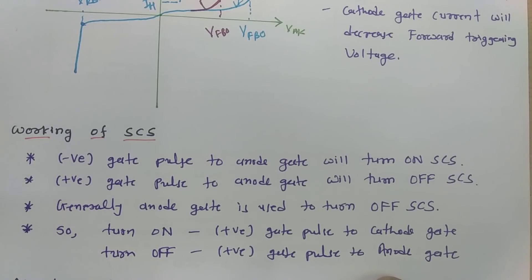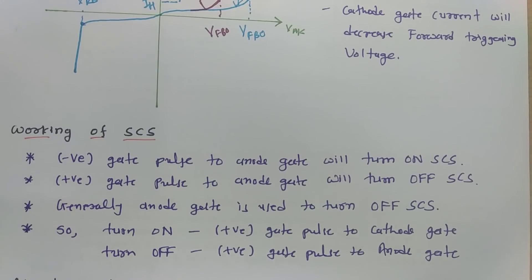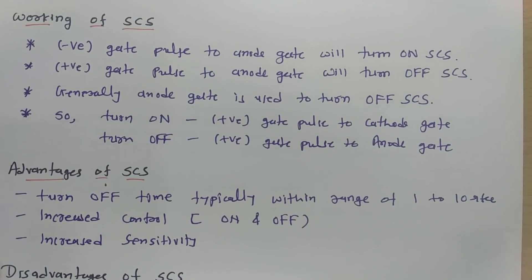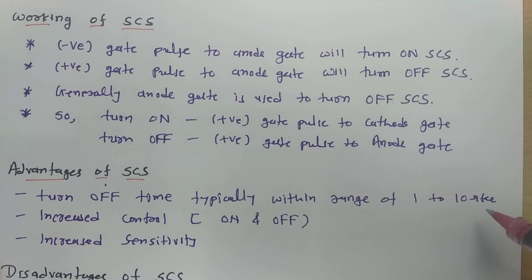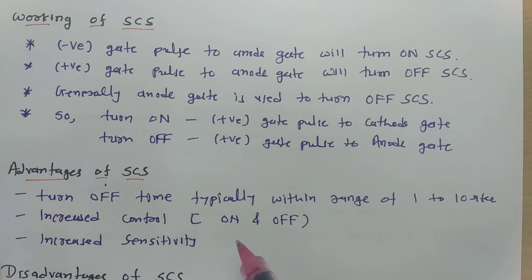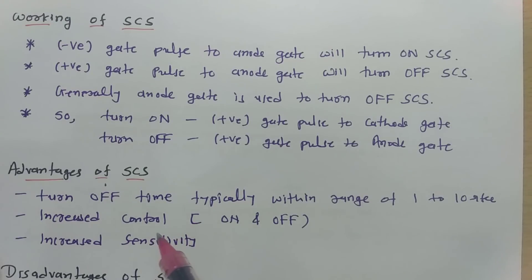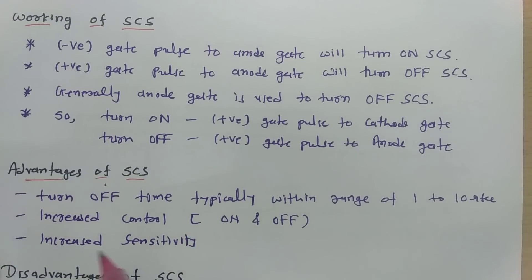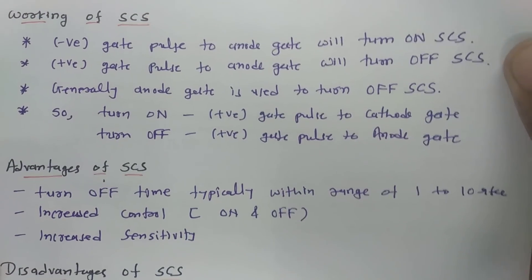This turn-on and turn-off via gate pulses is the new feature of SCS, otherwise characteristics are similar to SCR. Advantages of SCS include: turn-off time typically in the range of 1 to 10 microseconds, which is better than SCR; increased control — we can both turn on and turn off via gate pulses, unlike SCR which needs a commutation circuit to turn off; and increased sensitivity compared to SCR.